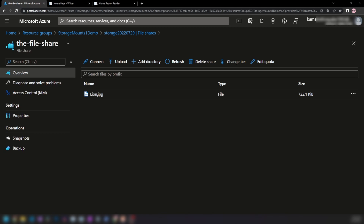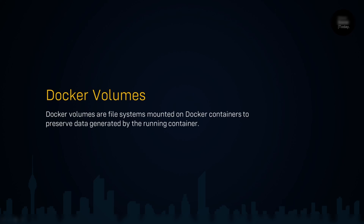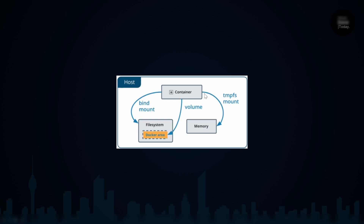Now that you saw what we're going to build today, let's understand how this works and build it from scratch. But before going forward, let's remind ourselves what Docker volumes are. Docker volumes are file systems mounted on Docker containers to preserve data generated by the running container. Basically, you have a mapping from the container to the host — files written to the container are actually stored in the host file system.